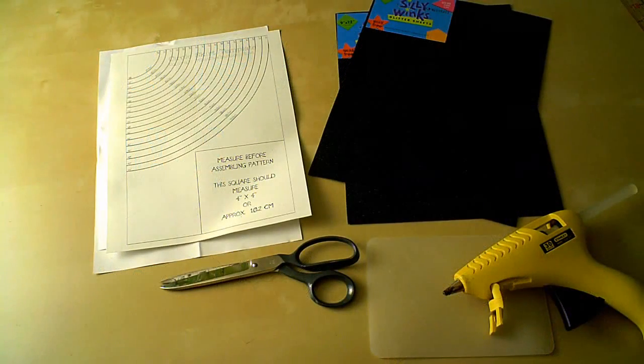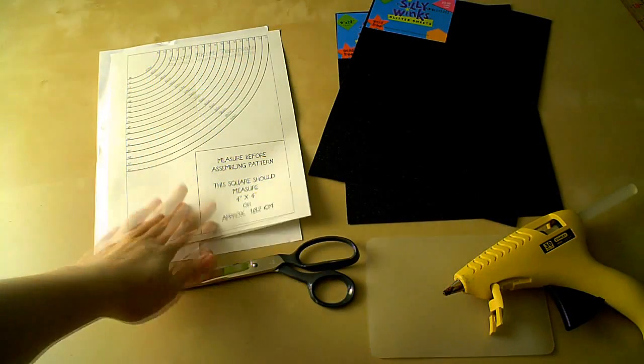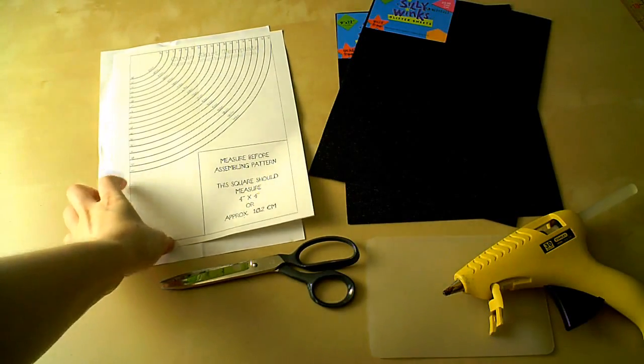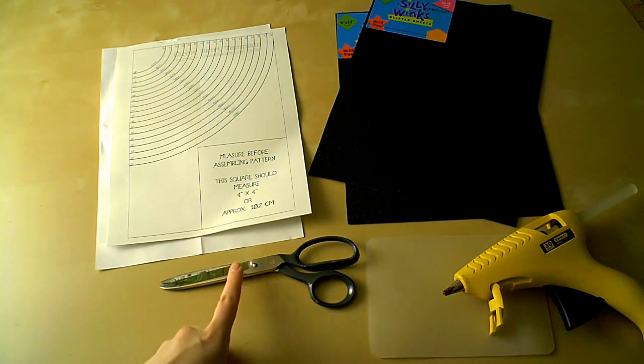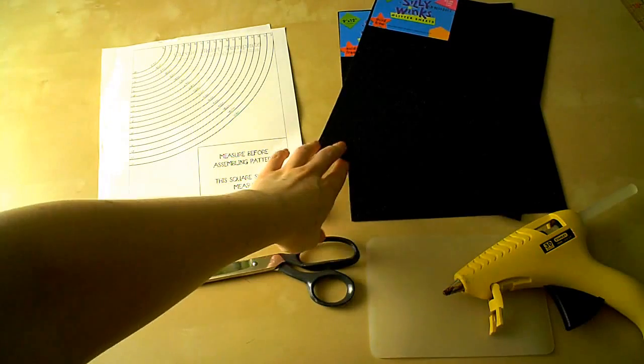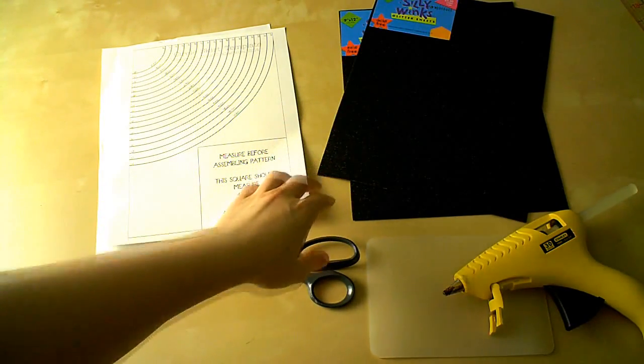These are the materials we'll be using today. You'll need to go download my circle skirt template. There's a link for that in the description. You'll also need two pieces of scrap paper. For the hat itself, I'm using craft foam and this is a special glittery craft foam.